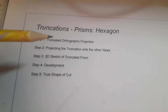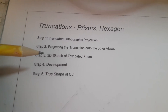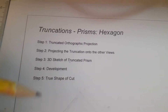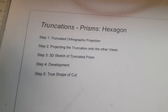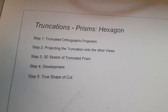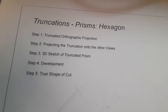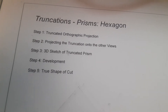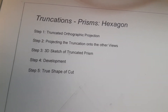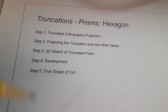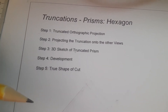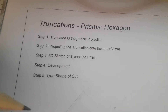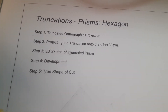Truncations of prisms — the hexagon. Step 1: truncate the orthographic projection, so you'll have a truncated front view. You'll either be given the dimensions to create a truncated front view or they'll be drawn for you. In our case, we have our cuts given and you have the dimensions to create the front view. Step 2: projecting the truncation onto the other views — once we have the truncated front view, we can create the truncated plan and the truncated end view.